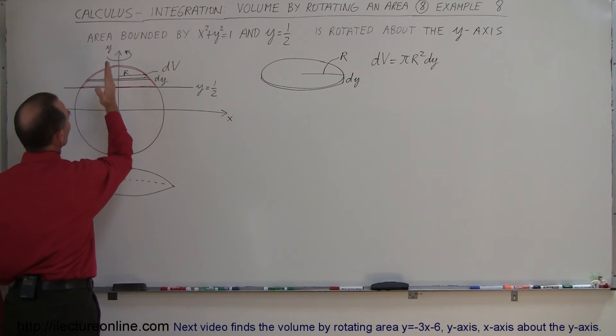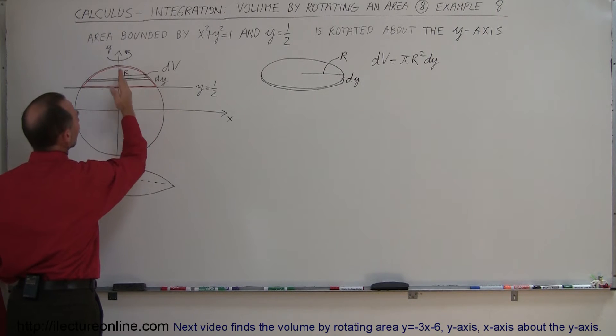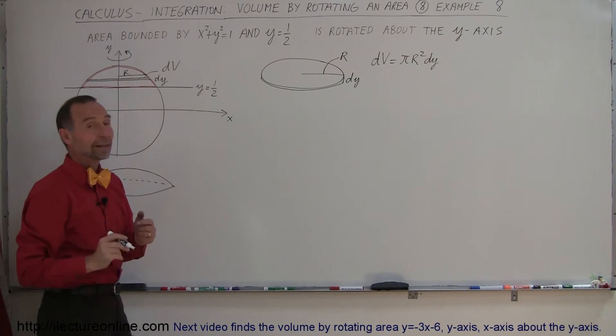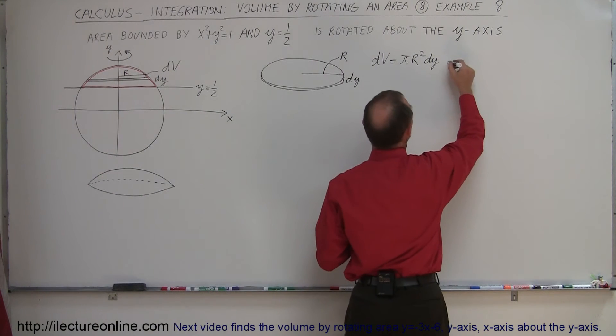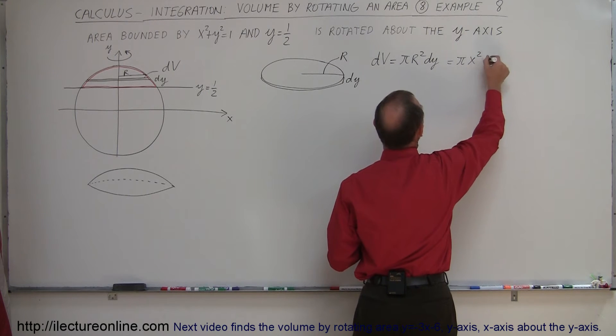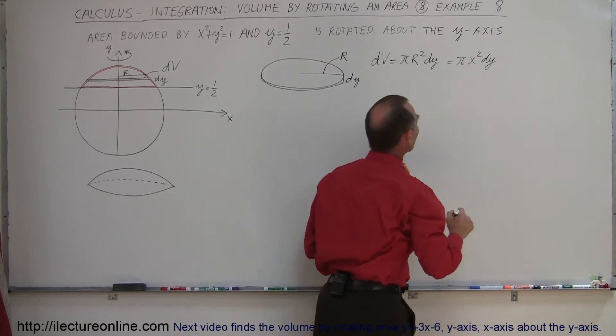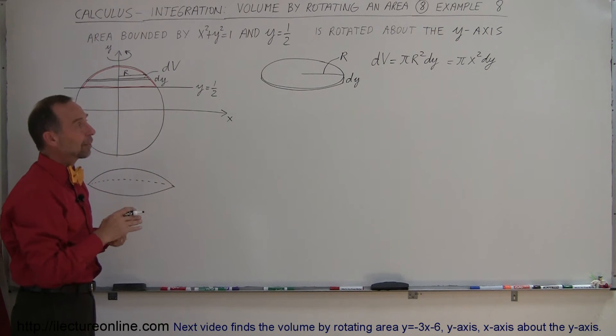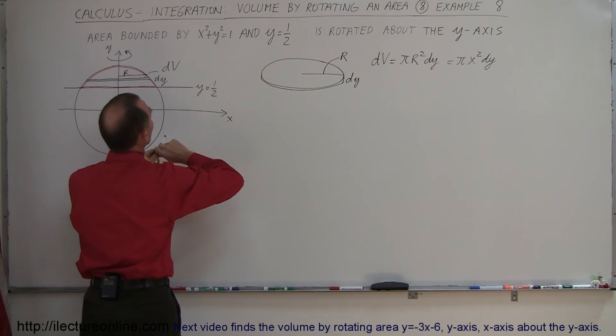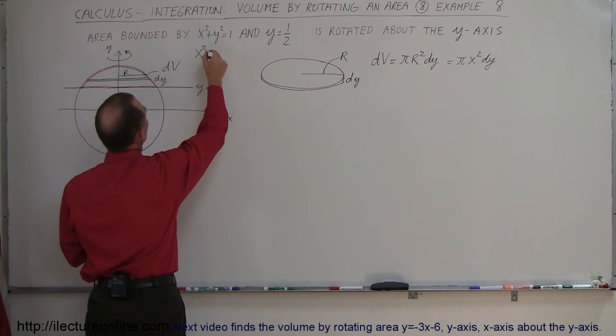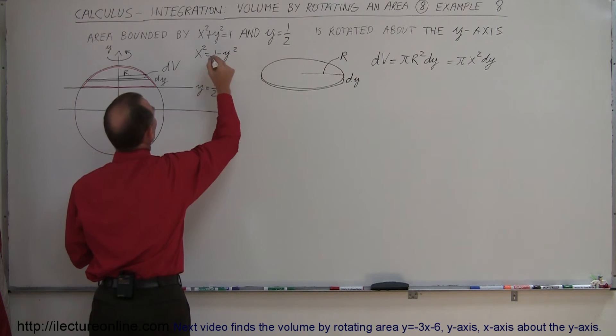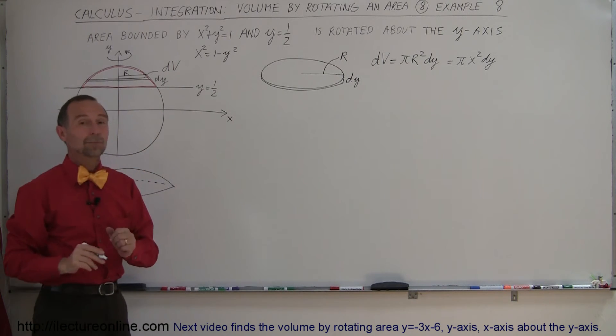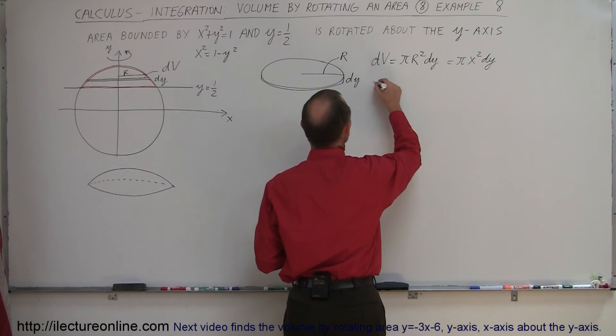Notice that this distance right here from the Y axis to the edge of that disc would be defined as X, so we can write this as pi X squared dy. But we still cannot integrate X's and Y's in the same integral, so now we have to convert from X squared in terms of Y. We look up here and say, alright, X squared is equal to 1 minus Y squared.